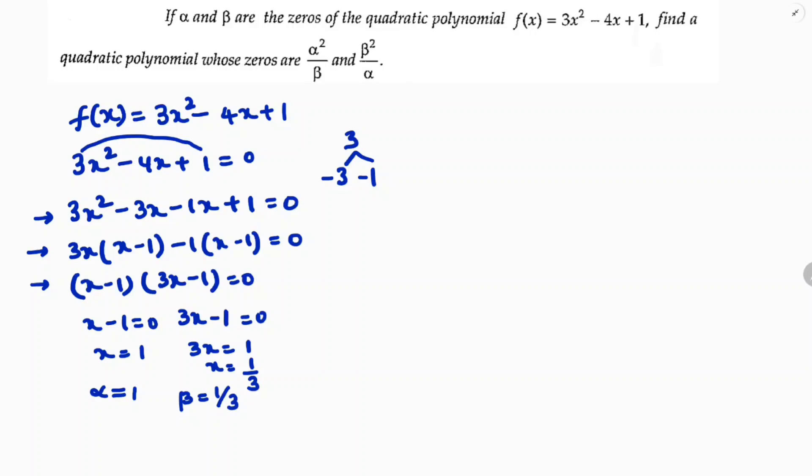Now I need to find a polynomial whose zeros are α²/β. So alpha is 1, so it is 1² / β, which is 1/3. So it is 3/1. So one zero is 3.